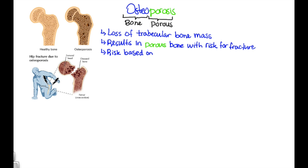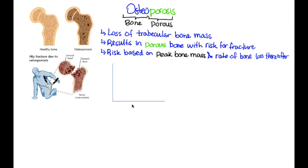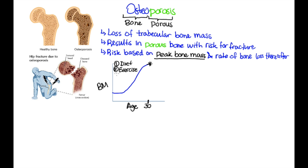Risk of osteoporosis is based on peak bone mass and rate of bone loss thereafter. In order to understand this, you need to understand the basic principle. We're going to draw bone mass on the y-axis and age on the x-axis. Over time, an individual develops something called the peak bone mass — this occurs at roughly the age of 30. Three things determine how high this peak will be: diet, exercise, and the vitamin D receptor you inherit from your parents, so basically genetics. These three factors play an important role in determining this height or peak bone mass.